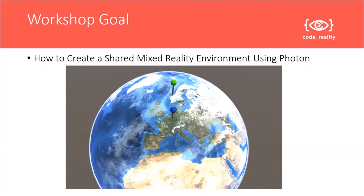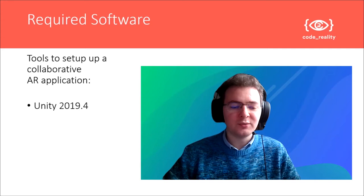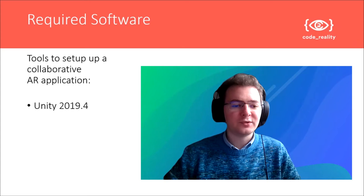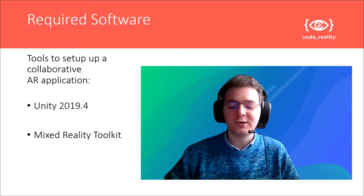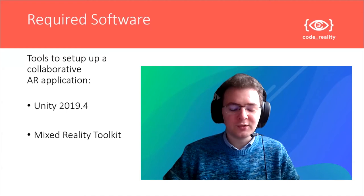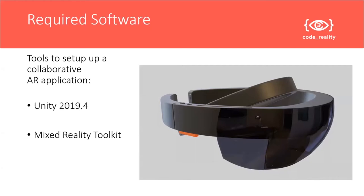For required software, we of course need Unity. I would use Unity 2019.4, and it also works with 2018.4. We will use the Mixed Reality Toolkit - an open source library by Microsoft for creating HoloLens applications and other Mixed Reality applications for other devices. Finally, I will show you how to integrate the Photon library, which is a networking library that runs all of the networking and synchronization logic in the background. We use that API to synchronize the content that we are showing.